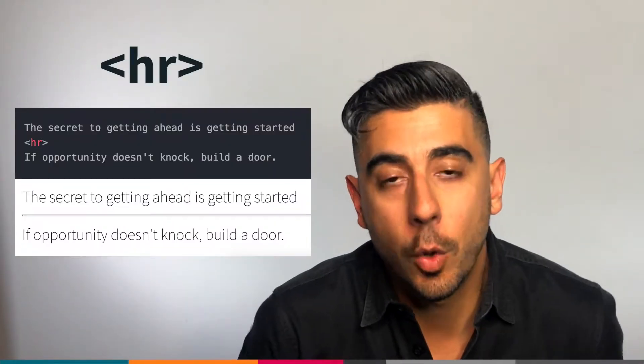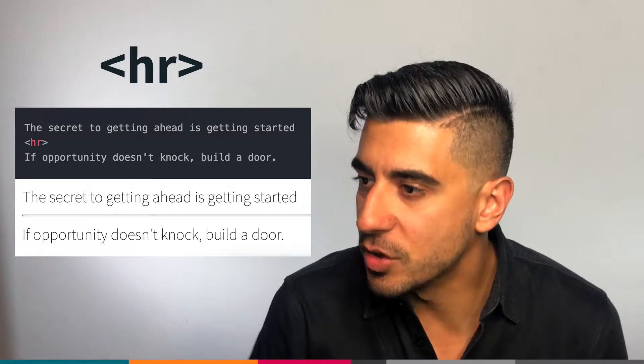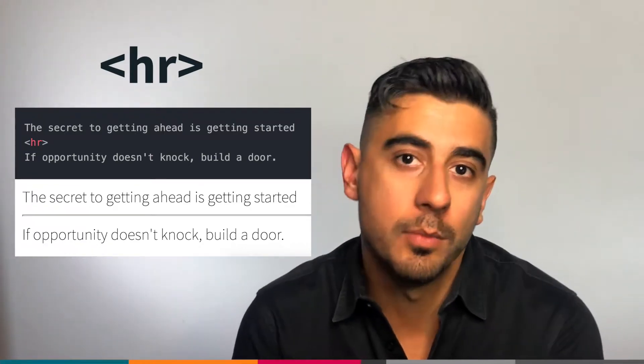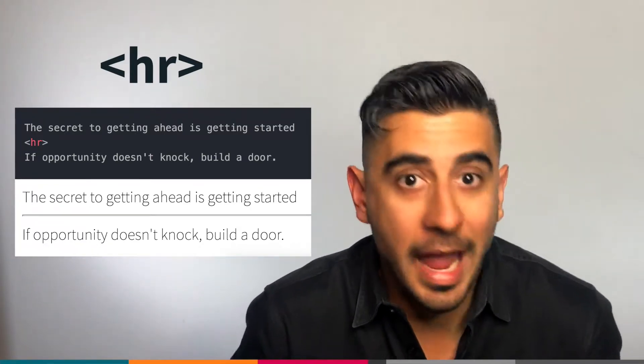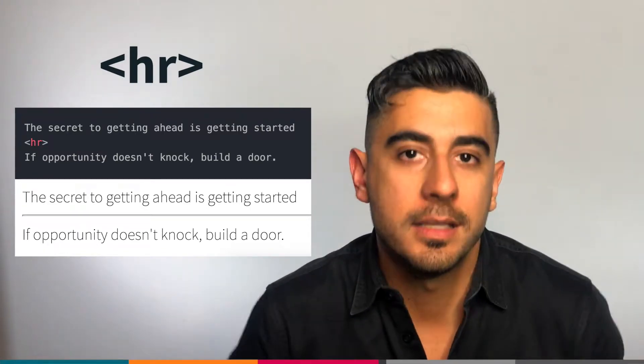We talked a lot about semantics in the previous video, so if you haven't watched it, go check that out. HR will give you a horizontal line. You can achieve the same thing using CSS borders and actually have more options there, but HR does exist if you need it.